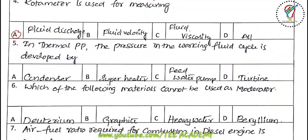Fifth question: in a thermal power plant, the pressure in the working fluid cycle is developed by the feed water pump. So feed water pump is the right answer.